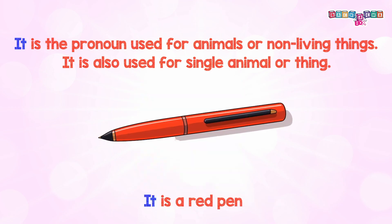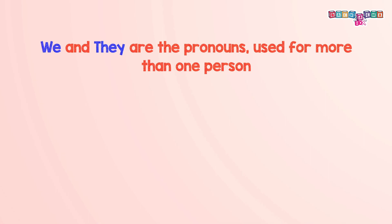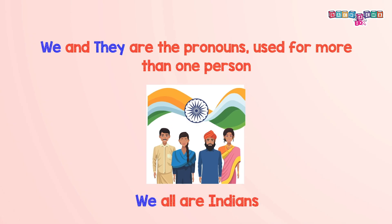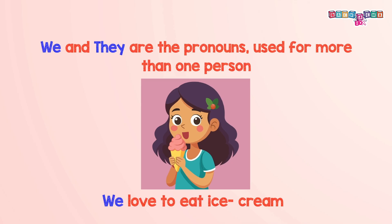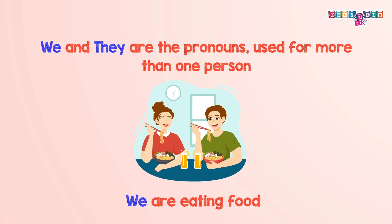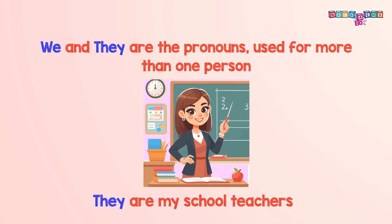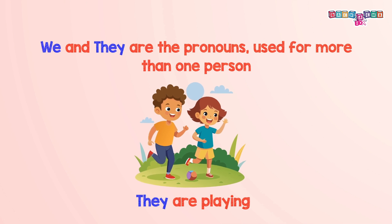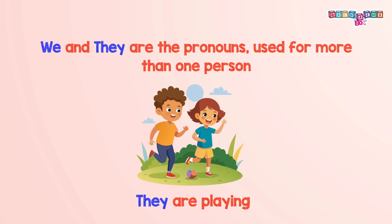'We' and 'they' are the pronouns used for more than one person. For example: We all are Indians. We love to eat ice cream. We are eating food. They are my school teachers. They are playing. They go to school together.